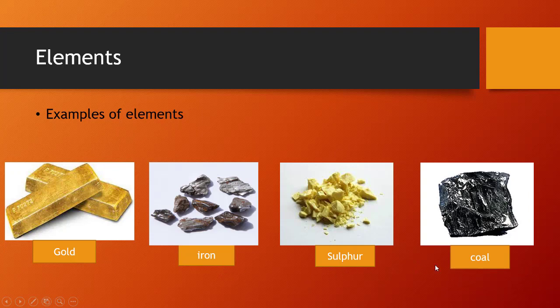If we take a piece of coal, which is carbon, and break it into very small pieces, you will find that the very small piece is also coal or carbon. Similarly, in the case of iron or gold, if we take a piece of these elements and break it into very small pieces, we will find that its very small piece is also iron or gold. So elements cannot be broken down into further simpler forms by any chemical processes.